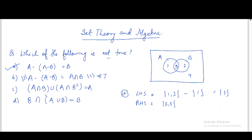For option (c), A intersection B is {3}. B complement contains {1, 4}, and A intersection B complement — since A is {1, 3} and B complement is {1, 4} — gives {1}. The union of {3} and {1} is {1, 3}, which equals A. So this option is also true.